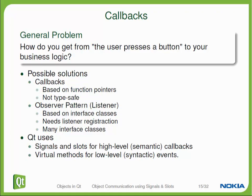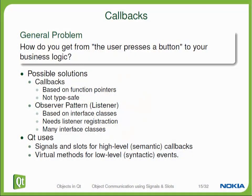For example, when a user clicks on a button, that means your application needs to execute a certain piece of code. Historically, there have been other solutions to the same problem, like callbacks. Callbacks had technical difficulties — for example, they were not type-safe. Signals and slots do solve this problem for Qt.